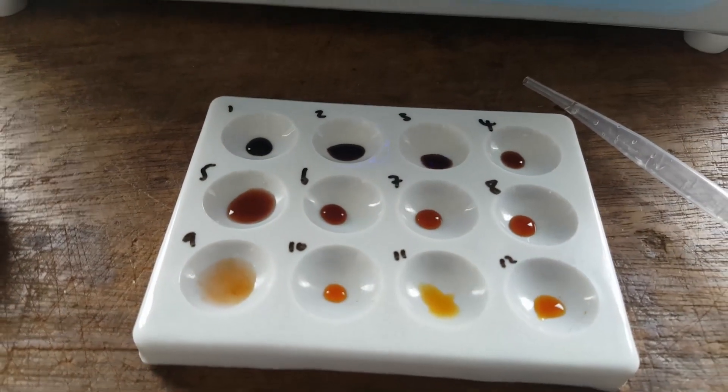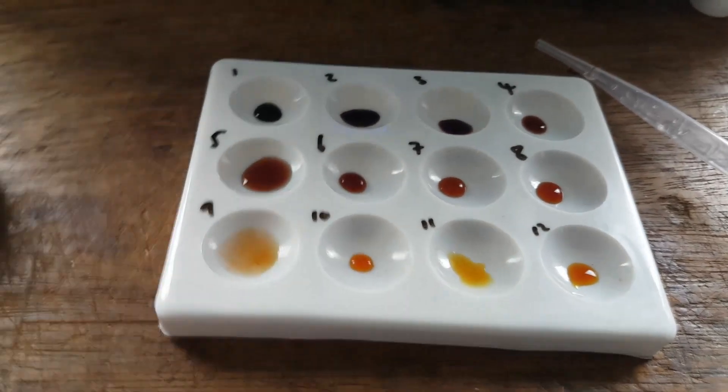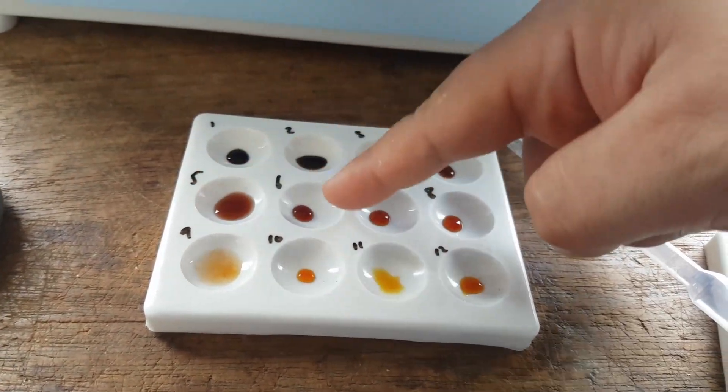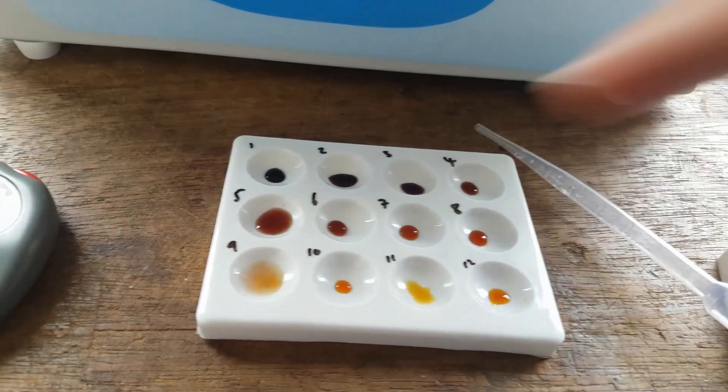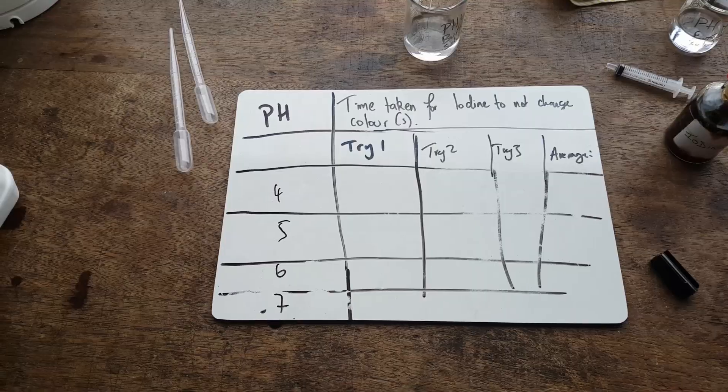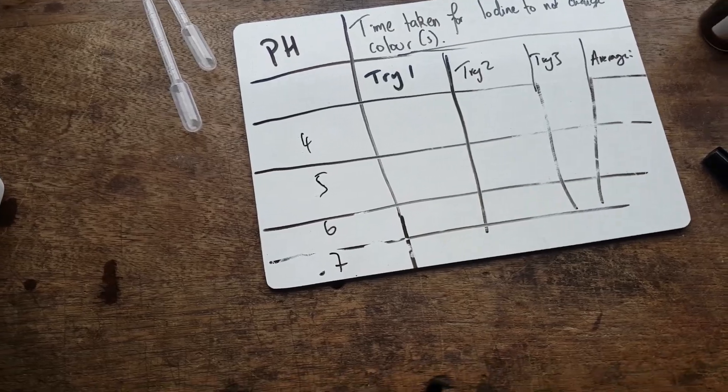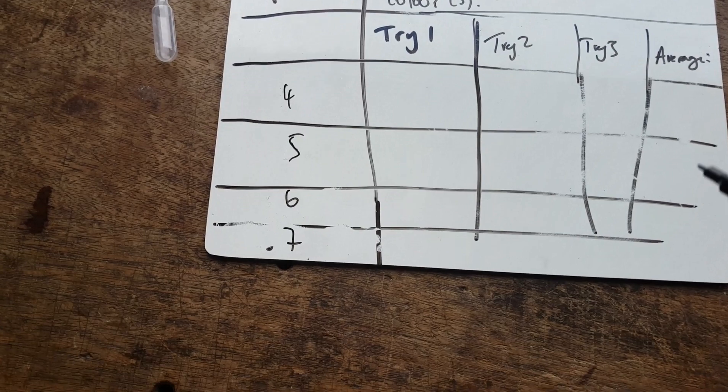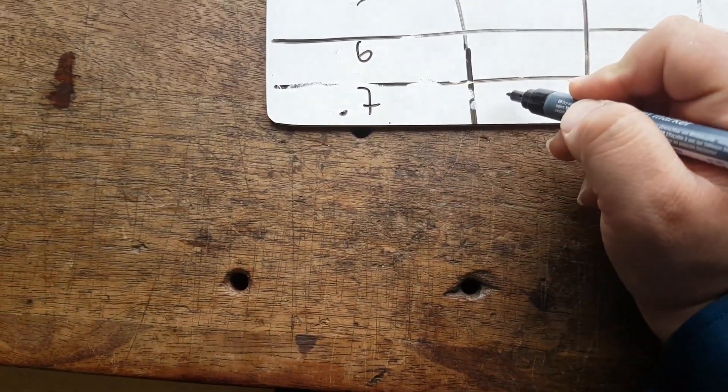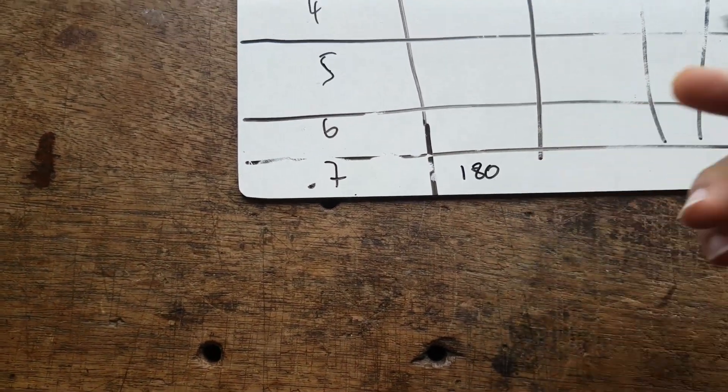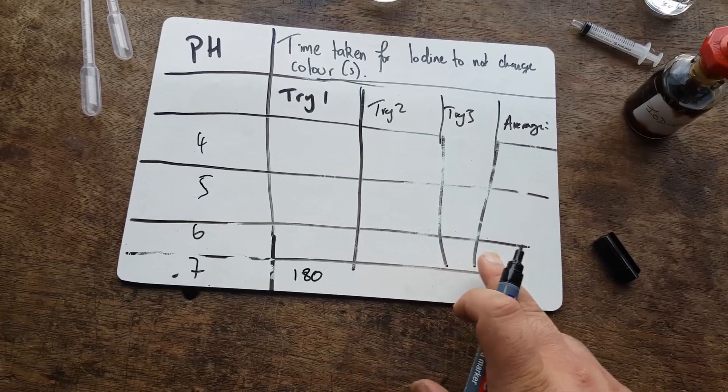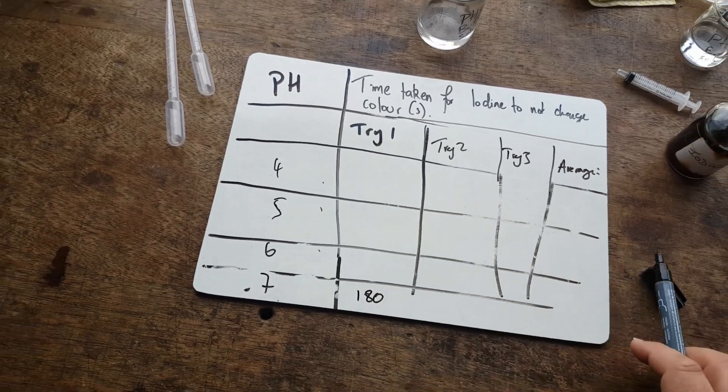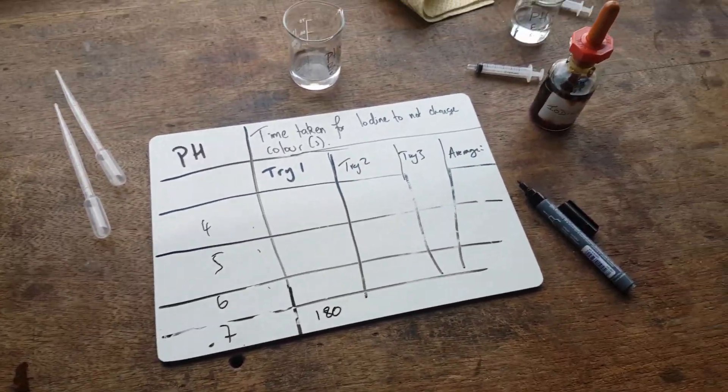So I've stopped it right there. And so the time taken, well, it's 20, 40, 1 minute, 20, 40, 2 minutes, 20, 40, 3 minutes. So you have to convert that into seconds. So I'm going to put those results in here. So I had 3 minutes, which is, well, 3 times 60. That's 180 seconds. So for pH 7, it is 180 seconds for my first try. I'm going to try it twice more to get an average. And you're going to do that for different pHs. And that is basically the experiment.